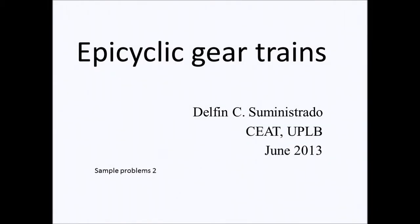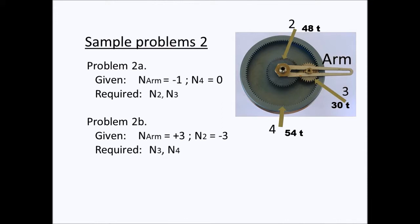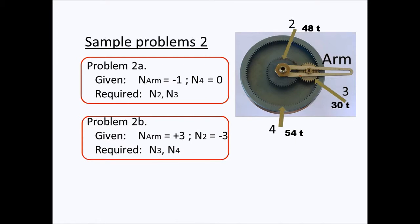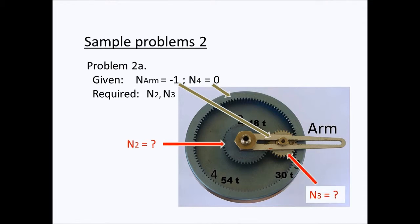In this video I will be demonstrating the solutions to two problems involving an epicyclic train. For the first problem, the arm rotates in the negative direction once while gear four is stationary, so we have to find the number of rotations of gear two and gear three.